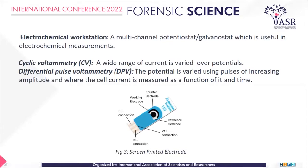For my current study, I worked on an electrochemical workstation which is basically a multichannel potentiostat or galvanostat that is used for electrochemical measurements in two different modes. The first is cyclic voltammetry (CV) mode, which uses a wide range of current that is varied over potential. And in DPV, that is differential pulse voltammetry, the potential is varied using pulses of increasing amplitude, and the cell current is measured as a function of this varying potential and also time. As you can see in this slide, this screen-printed electrode has three different electrodes: working electrode, counter, and reference electrode.